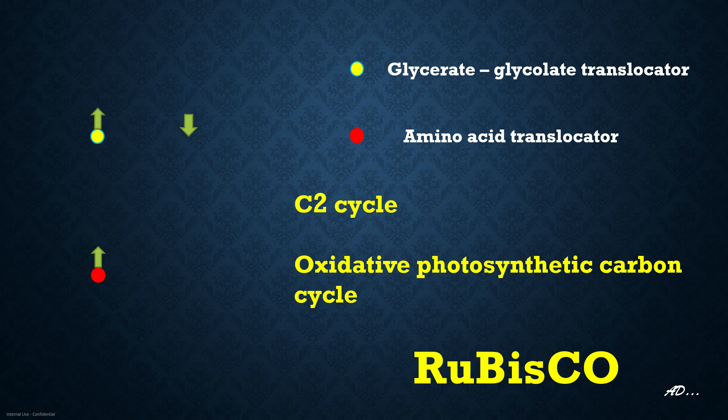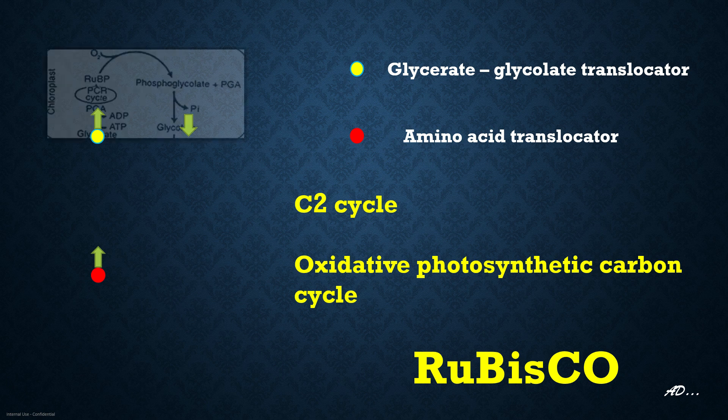At elevated temperature, the affinity for oxygen increases in Rubisco. That means Rubisco will bind oxygen more comfortably at an elevated temperature. Now we will come to the cascade of reactions.